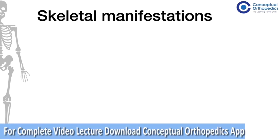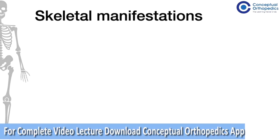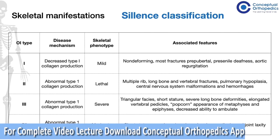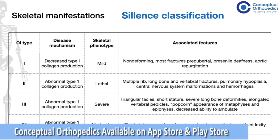Osteogenesis imperfecta has been classified according to the Sillence classification. Sillence classified osteogenesis imperfecta into four types.